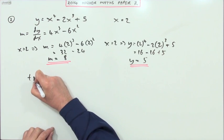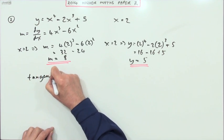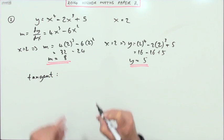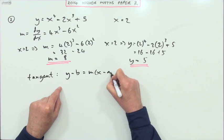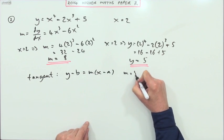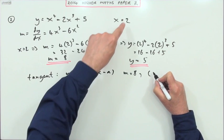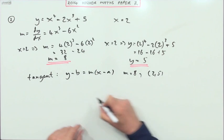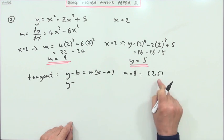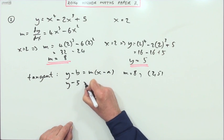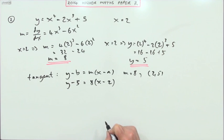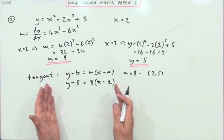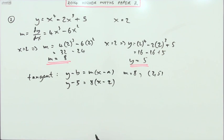So, for the tangent, well, the tangent's a line, so I'll put down the standard equation for a line. y minus b is m times x minus a, where the gradient is 8, and the point on it is the point 2, 5. So, y minus the y-coordinate, make sure you put the right one down, is the gradient 8 times x minus the x-coordinate, but that may well be when it stops in the marking scheme for the final mark.